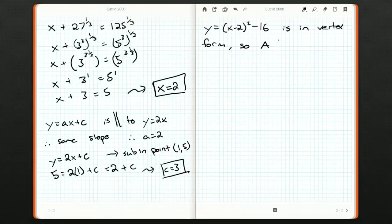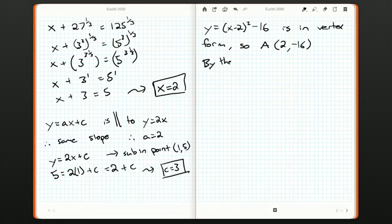A being the vertex, it must be at the point where does this become zero? It's going to be at 2, x equals 2, and then negative 16. So now we know what A is.